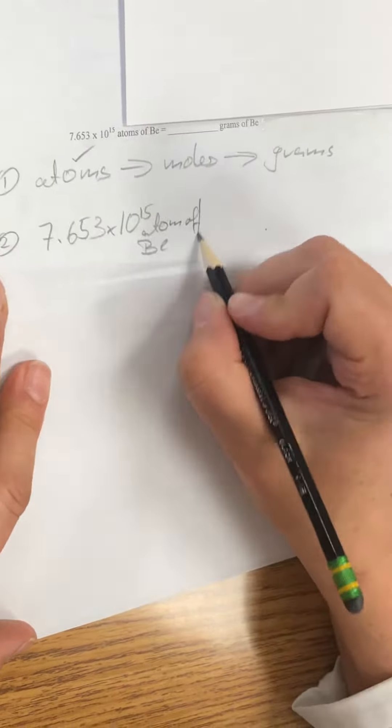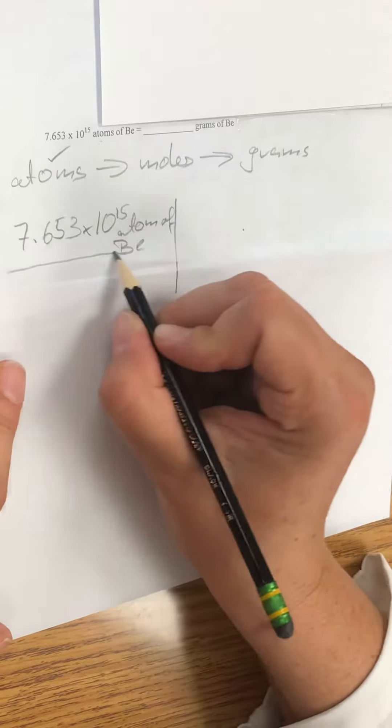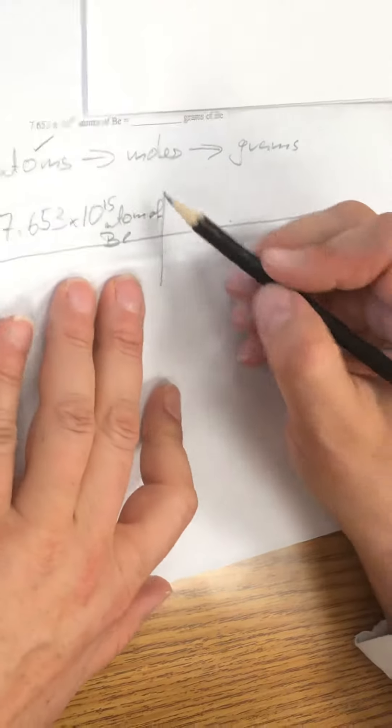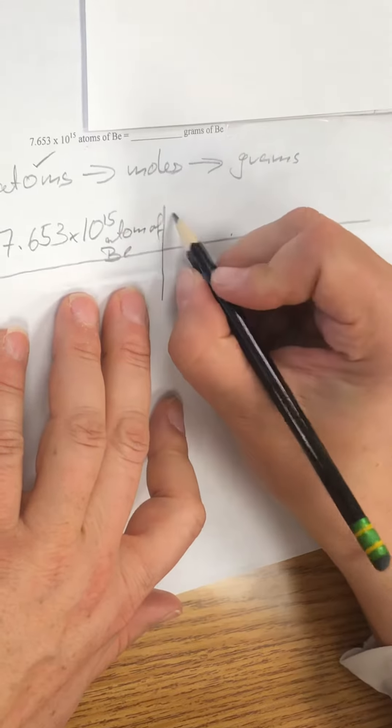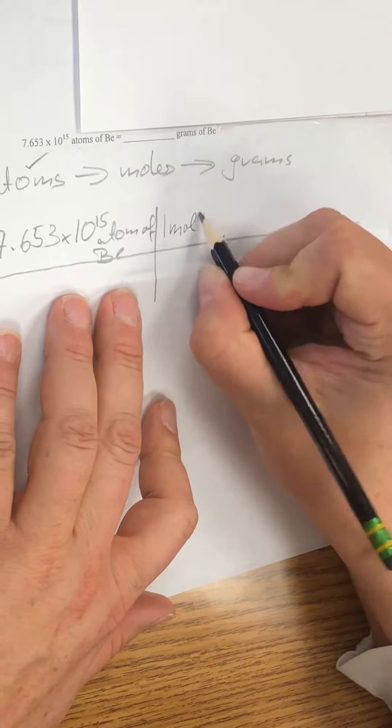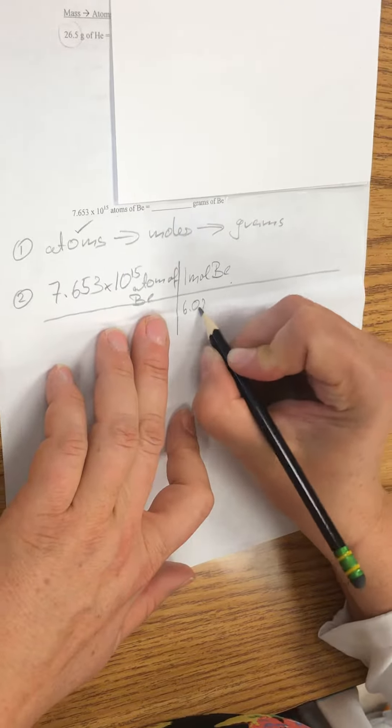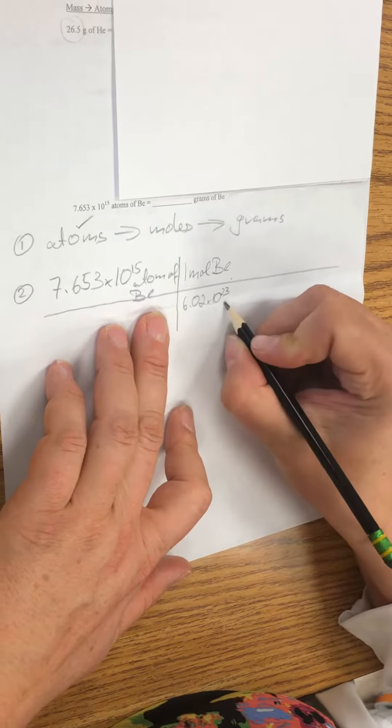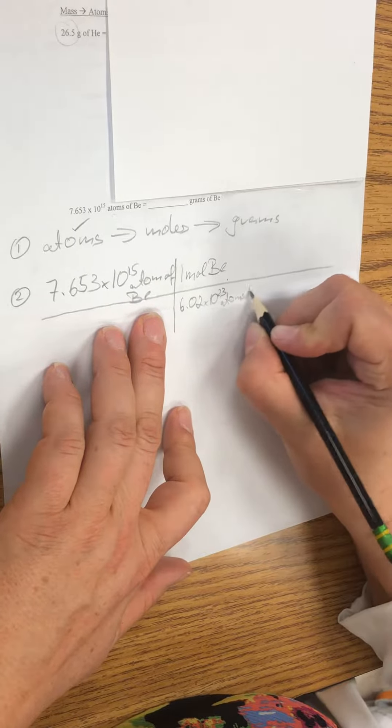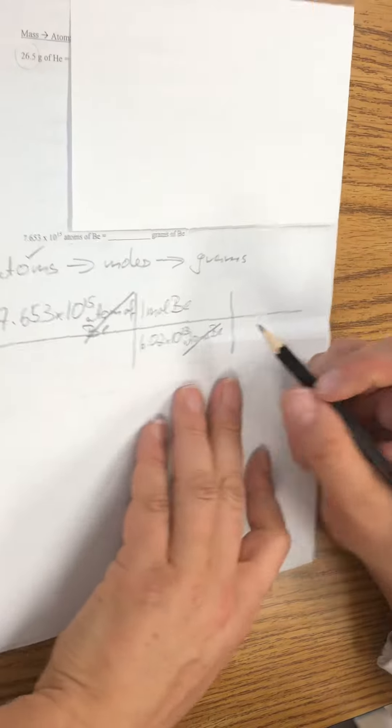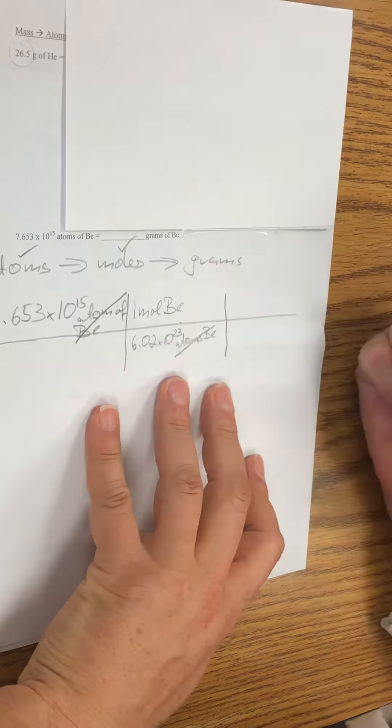Beryllium is the main ingredient in emeralds. And then I have the conversion to moles, so I know that one mole of beryllium has 6.02 times 10 to the 23rd atoms of beryllium. And now I'm in moles.